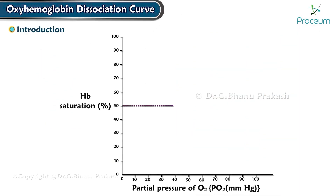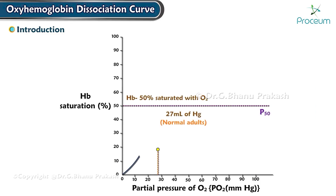The point on the curve at which hemoglobin is 50% saturated with oxygen is called the P50, and it is 27 millimeters of mercury in normal adults. The P50 is used when discussing how the oxygen dissociation curve shifts based on physiologic factors.